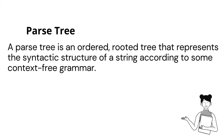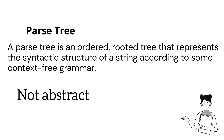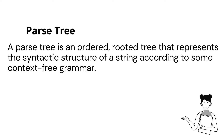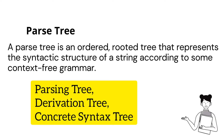This is the Parse Tree. A Parse Tree is an ordered rooted tree that represents the syntactic structure of a string according to some context-free grammar. We have a string and a syntactic structure that represents the syntax tree, along with the context-free grammar. The parse tree is also called a Derivation Tree or a Concrete Syntax Tree.